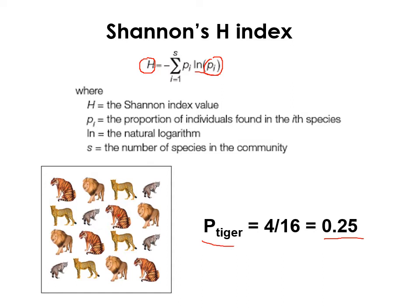Shannon's H is a bit problematic in that it can be hard to interpret. It accounts for both diversity and evenness, but you can get a high H with either high richness or high evenness, or both. And if you get an H value of two, it's not necessarily exactly half as diverse as an H of four, because it's an index incorporating multiple things and the sampling distribution isn't straightforward. It's a little messy to compare.